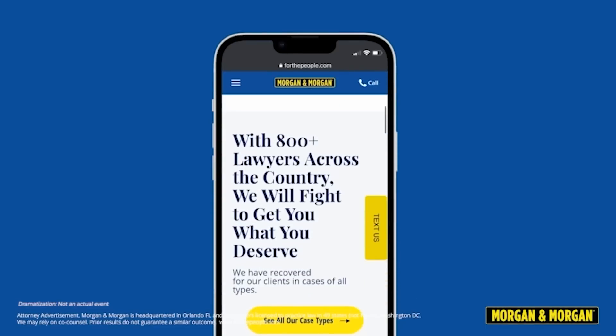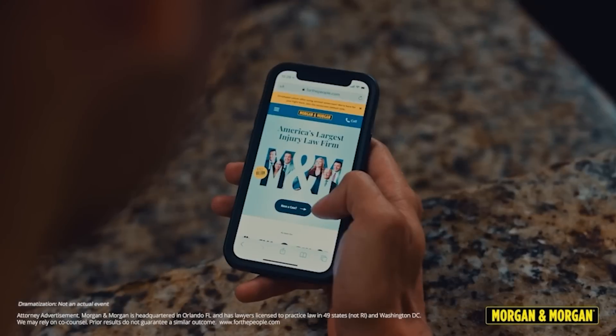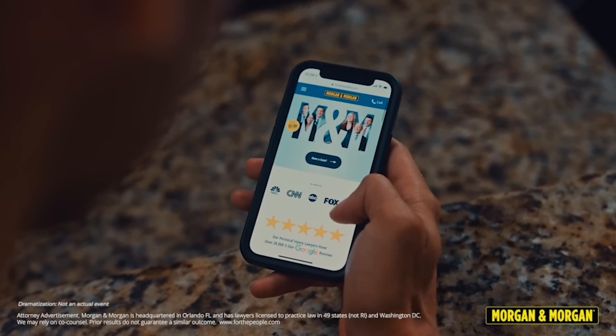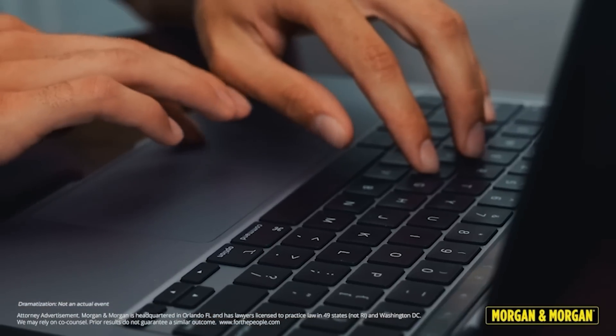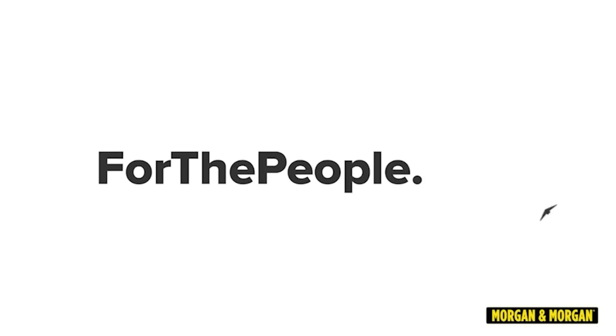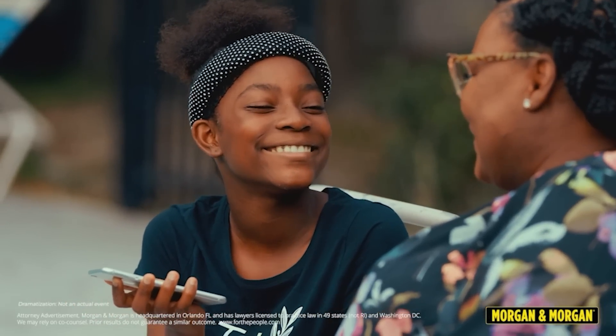So when you find yourself injured in an accident, remember that Morgan & Morgan is here to help you navigate through the legal cosmos with ease. Injured and don't know where to start? With Morgan & Morgan, it's so easy. If you're ever injured in an accident, you can submit a claim in eight clicks or less without ever having to leave your couch. For more information, go to ForThePeople.com or dial Pound Law. That's Pound 529 from your cell phone. Stay safe and may the force of Morgan & Morgan be with you on your legal adventures.